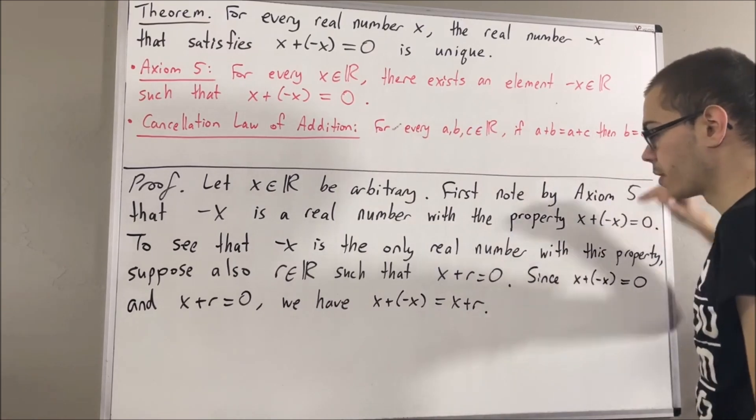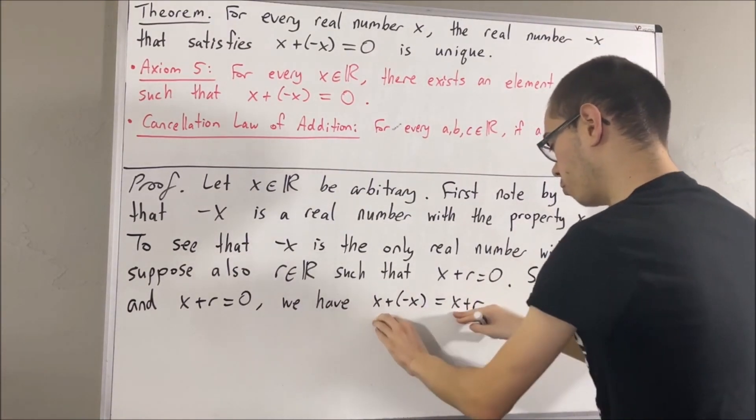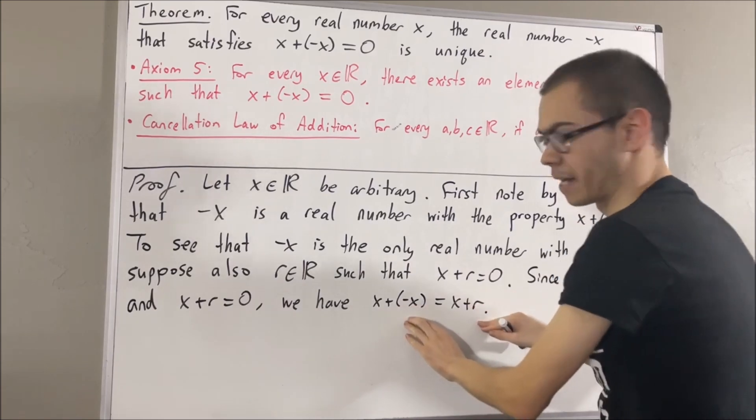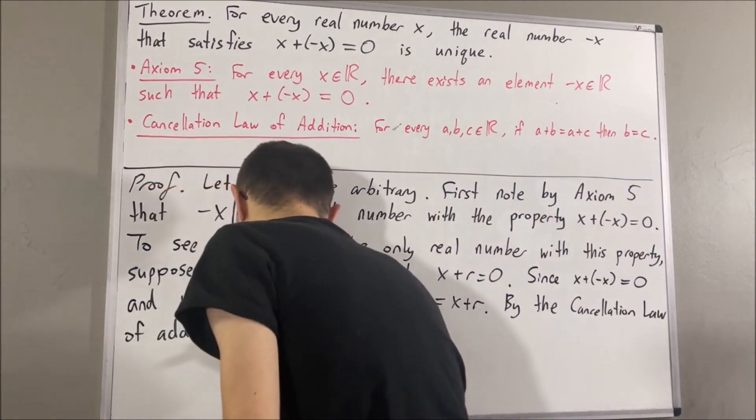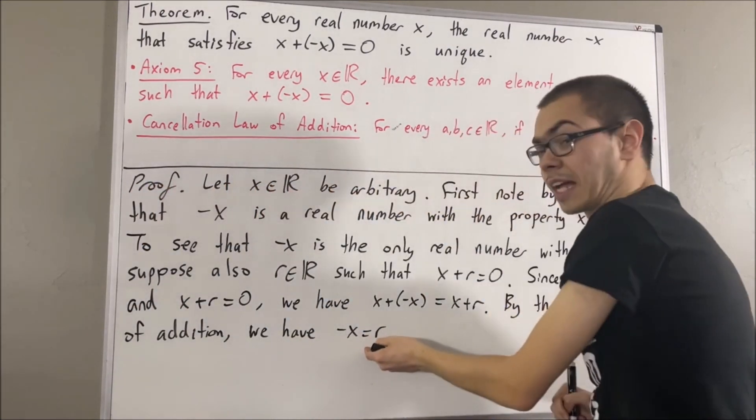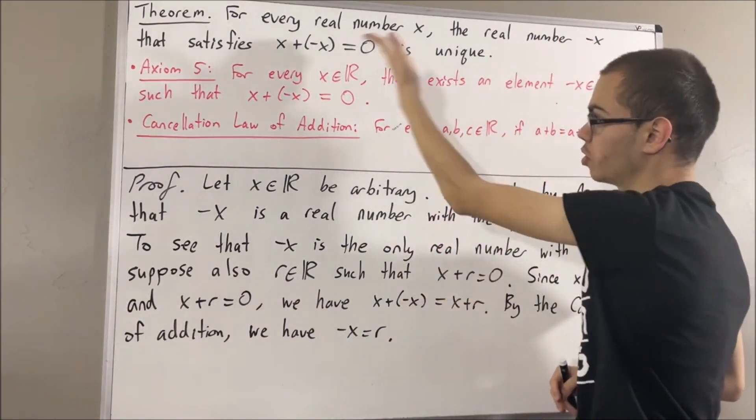But then, applying the cancellation law of addition, since x plus negative x equals x plus r, we cancel out the x's, so we're left with negative x equals r. And that is exactly what we wanted to show. So we have shown that the negative x is the only real number with this property.